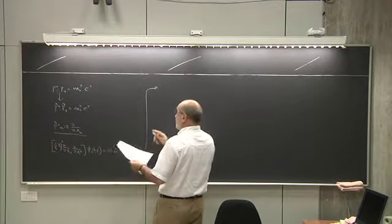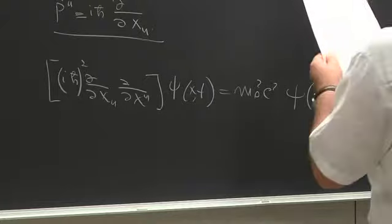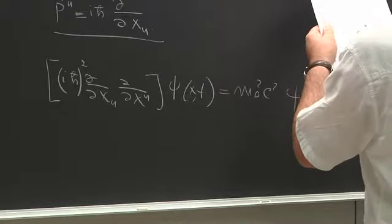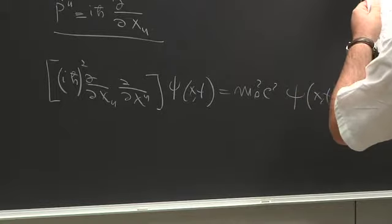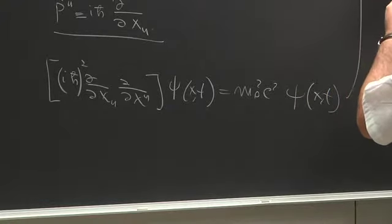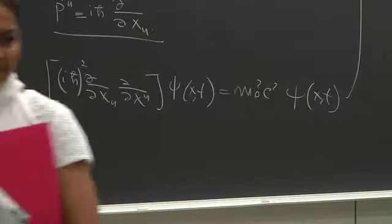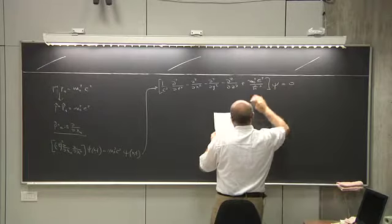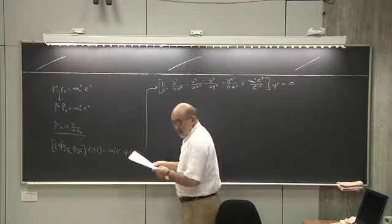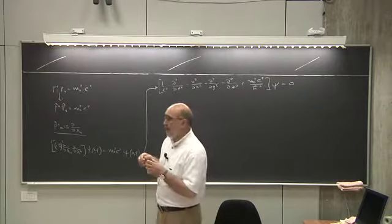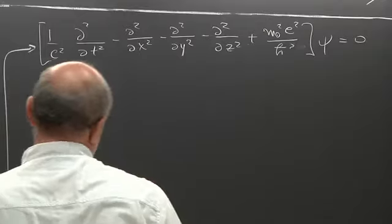If you work it out explicitly, keeping account of the signs, the final result is: one over c-squared times the second derivative with respect to t-squared, minus the second derivative with respect to x-squared. That gives us the Klein-Gordon equation written explicitly.